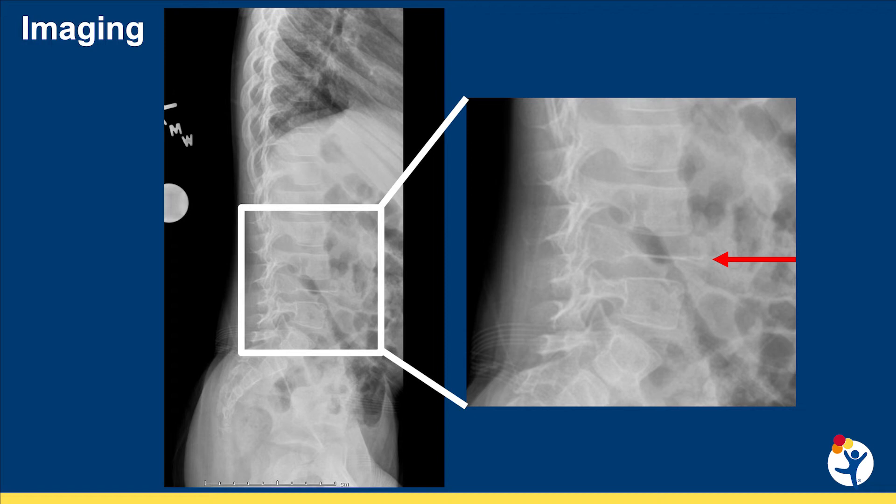Unlike some other conditions that can occur in bones, when you have a compression fracture with CRMO, that vertebra plana will not reconstitute. So the patients can get permanent deformities of their spine.